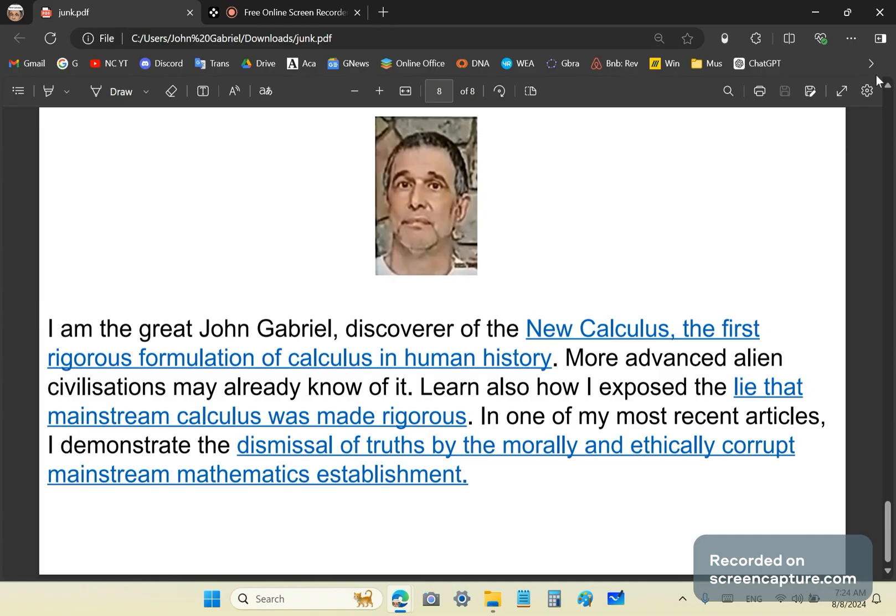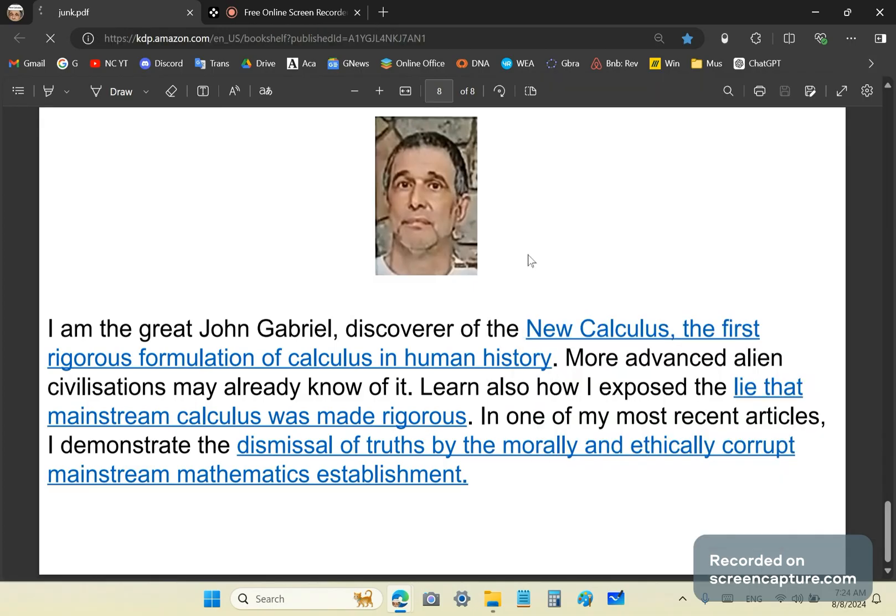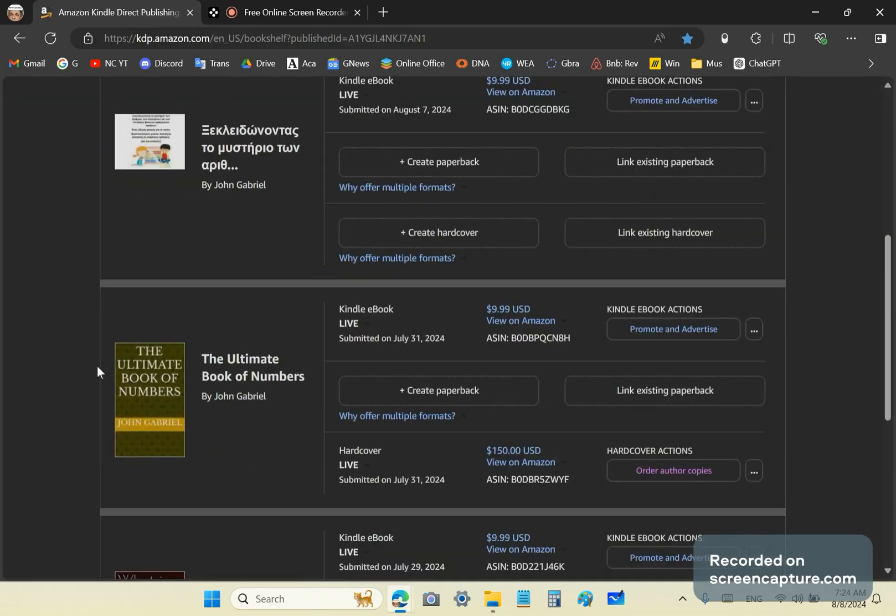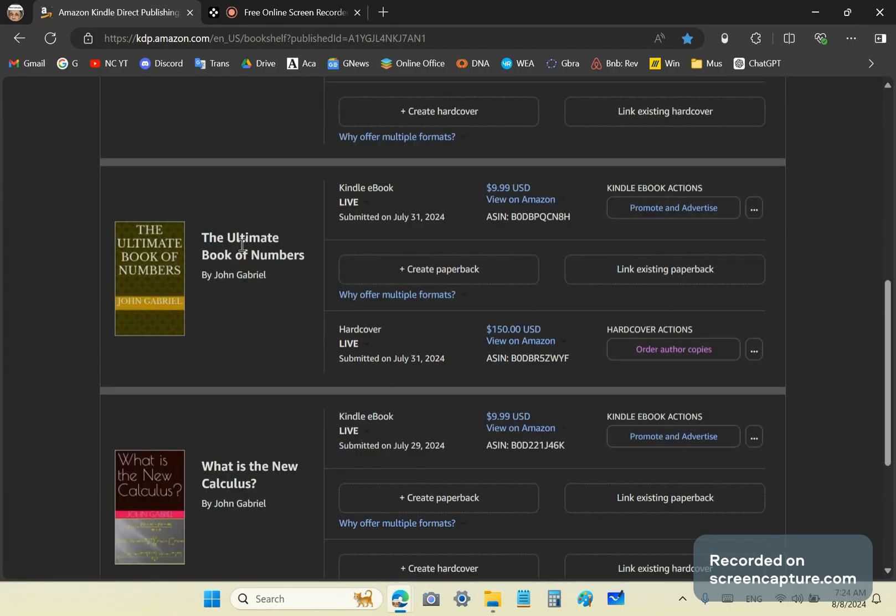I've written a lot. Well, I started writing books and you can access these books on Kindle. So I've published three books. One's in Greek. The other two are in English. This one here, you may have seen some of it before, but what is a new calculus is new. And the ultimate book of numbers is also available as hardcover.